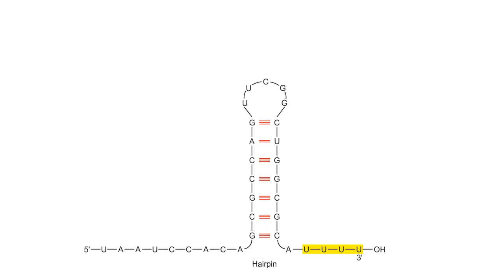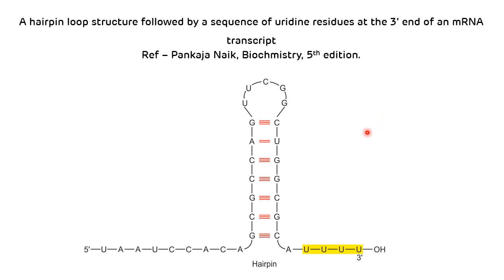In rho-independent termination, the transcribed region of the DNA template contains stop signals, the simplest of which are palindromic GC-rich sequences. Due to these palindromic GC-rich sequences, a hairpin loop-like structure forms in the RNA. This hairpin loop disrupts many adenine-uracil base pairs in the RNA-DNA hybrid segment and disrupts interactions between RNA and RNA polymerase, facilitating dissociation of the transcript. The hairpin loop is followed by segments of uridine residues at the 3' end of the mRNA.